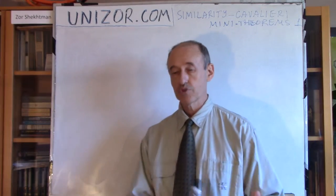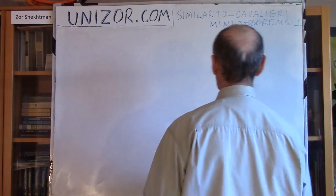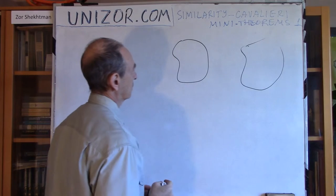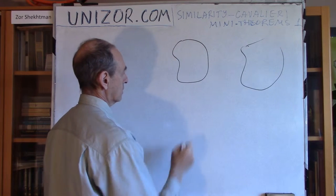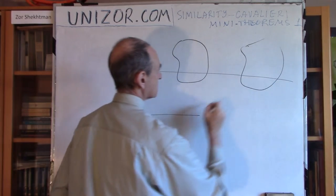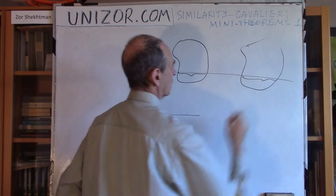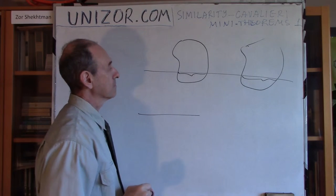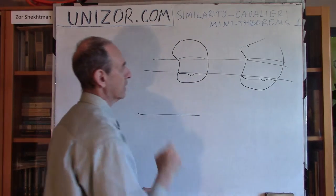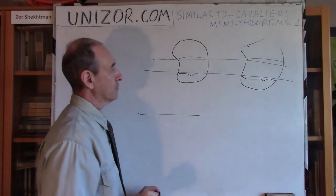First of all, I'm sure you remember the previous lecture about the Cavalieri Principle. In the two-dimensional case, if you have two different flat figures on the plane and there is a base line, such that each line parallel to the base intersects both figures along segments of the same lengths, then the area of those two figures is the same.